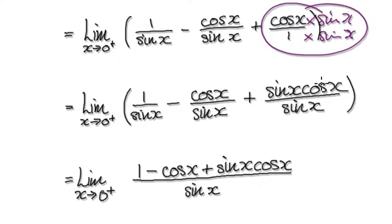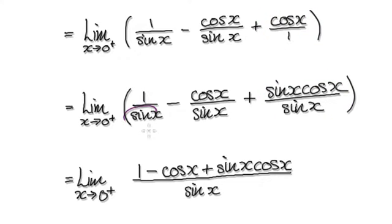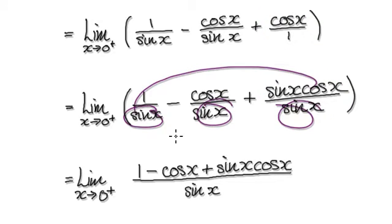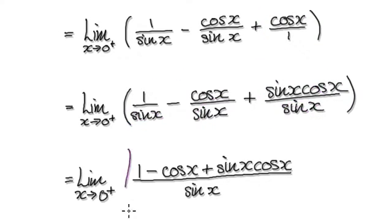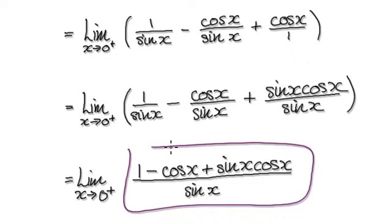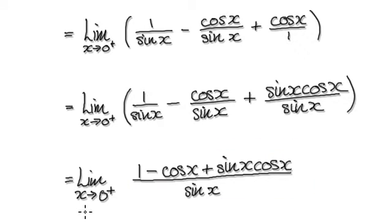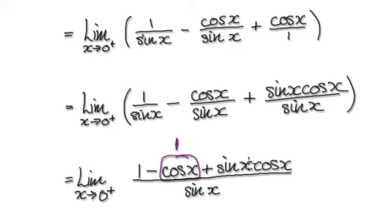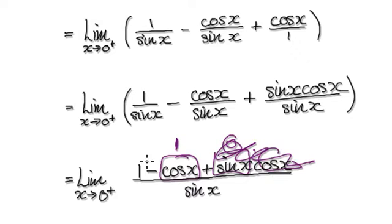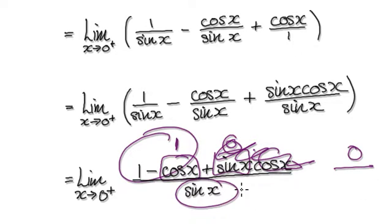And then this whole thing here will become this. All the denominators are the same, so you can merge all the fractions together. That will then take you to here. Now let's check: as x tends to 0 from the right-hand side, this thing here will head towards 1. This thing here is going to be 0. So 0 times anything is going to be 0. So here we've got 0 over 0.